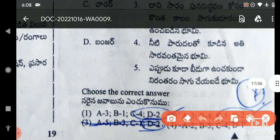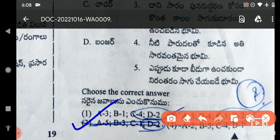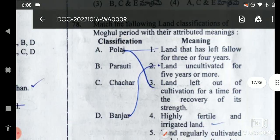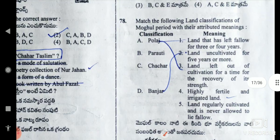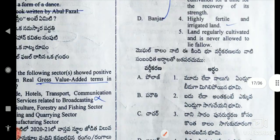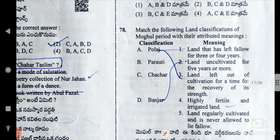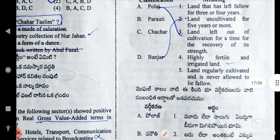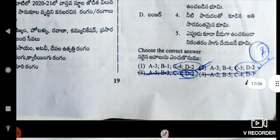The options are: A5, B3, C1, D2. A5 is Polarge — land regularly cultivated. B3 is land left out of cultivation for a time for recovery of its strength. C1 is land that has been left fallow for 3 or 4 years. Banjar is D2 — land uncultivated for 5 or more years.